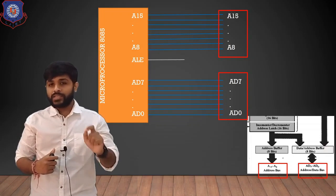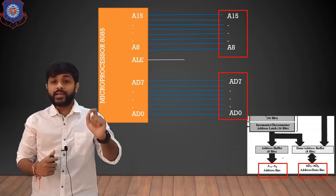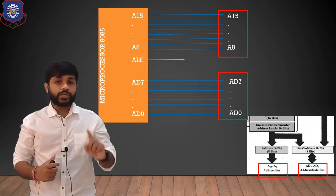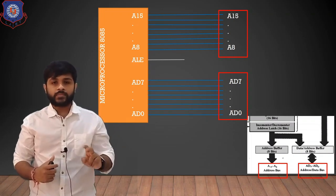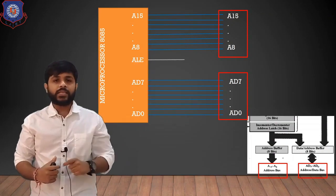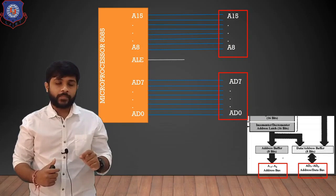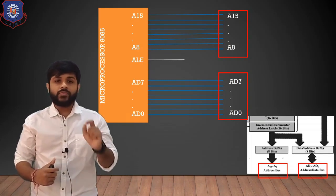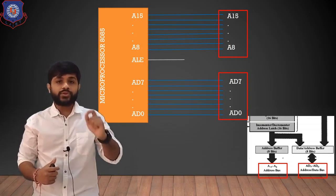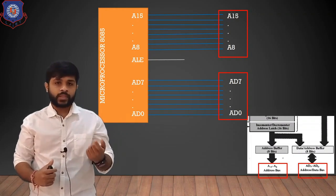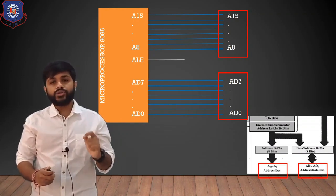So from this you can clearly understand that at a time, the processor can either create address bus or data bus. There is a pin known as ALE, which is Address Latch Enable. Using this pin, we will bifurcate AD0 to AD7 into D0 to D7 or A0 to A7. For that, we are going to use a latch.